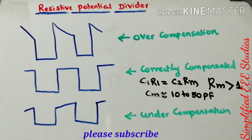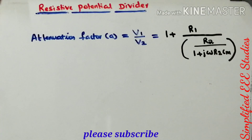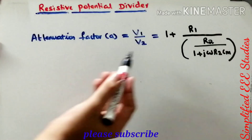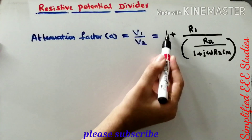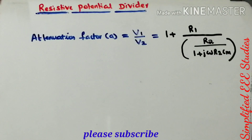Now let us consider the attenuation factor, which is one of the most important parameters for designing a resistive potential divider. We normally use a compensated resistive potential divider — capacitors must be added in parallel to maintain a properly compensated network, otherwise flashover will occur. The attenuation factor for the modified resistive potential divider is V1/V2, which gives: 1 + R1/R2, divided by 1 + jωR2·Cm, where Cm is the meter capacitance.